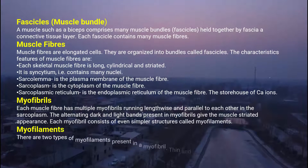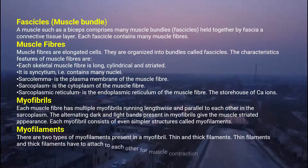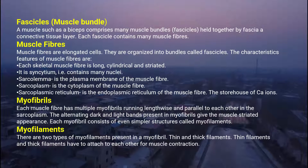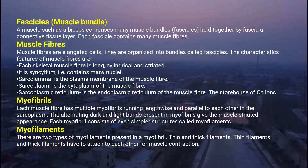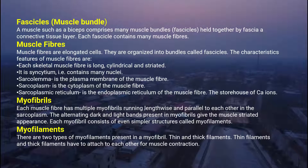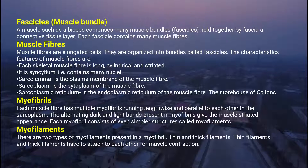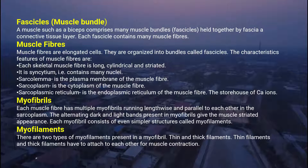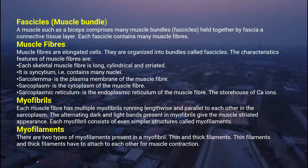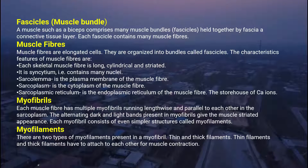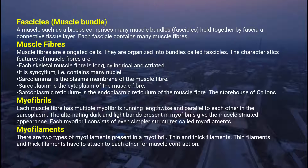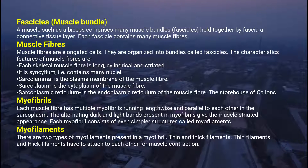Muscle fibers are elongated cells organized into bundles called fascicles. Each skeletal muscle fiber is long, cylindrical, and striated. It is a syncytium — that is, it contains many nuclei. The sarcolemma is the plasma membrane of the muscle fiber. The sarcoplasm is the cytoplasm, and the sarcoplasmic reticulum is the endoplasmic reticulum of the muscle fiber — it is the storehouse of calcium ions.